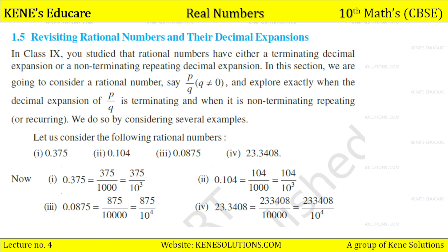In this section we are going to consider a rational number p upon q and explore exactly when the decimal expansion of p upon q is terminating and when it is non-terminating repeating or recurring. We do so by considering several examples. Let us consider the following rational numbers.